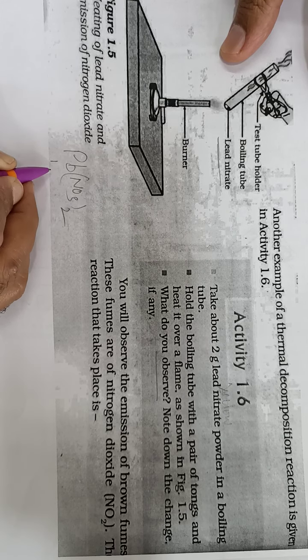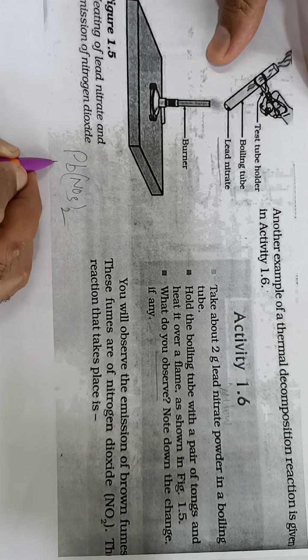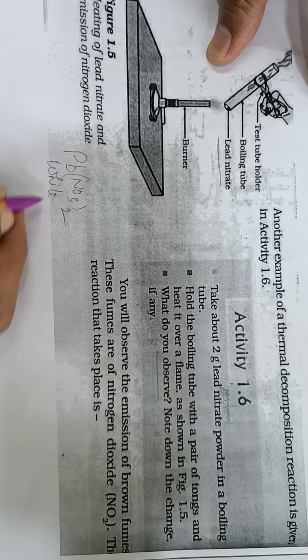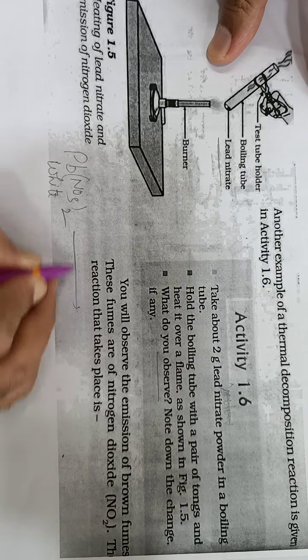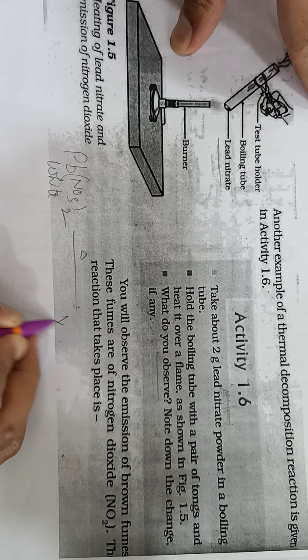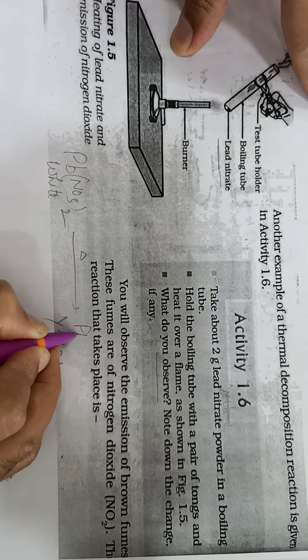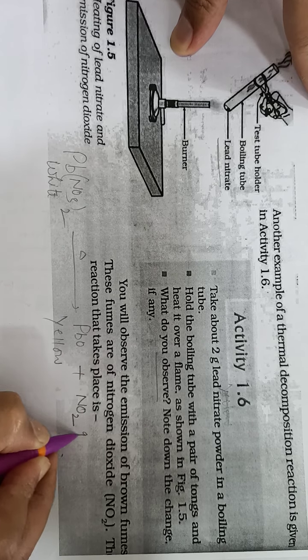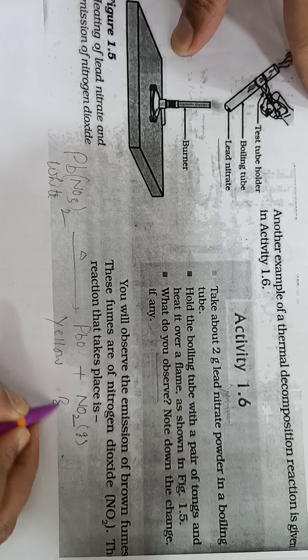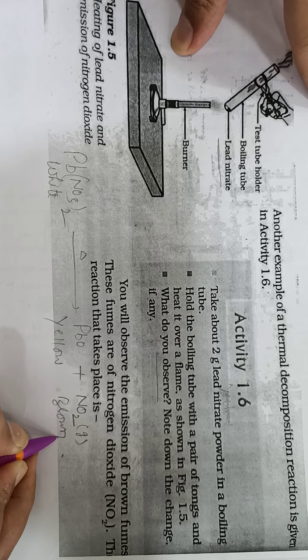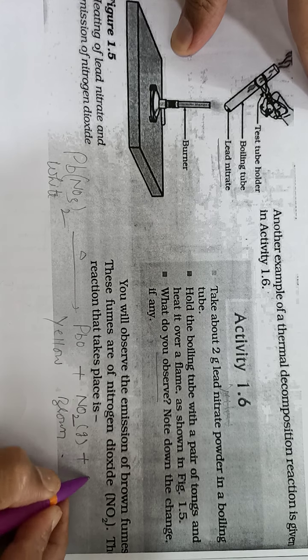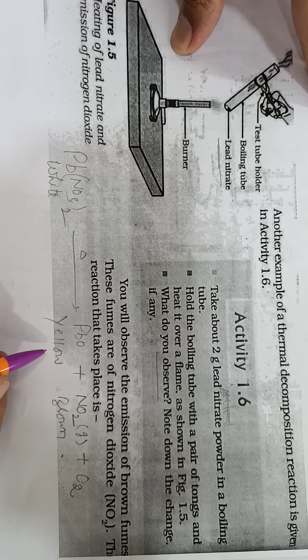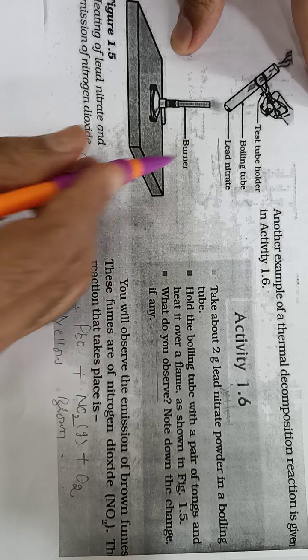Lead nitrate Pb(NO3)2 - it is actually white color crystal. When it is heated, it will form yellow color lead oxide and brown color gas fumes are released - nitrogen dioxide and oxygen. This is thermal decomposition, that is decomposition in the presence of heat.